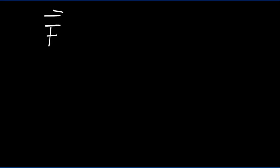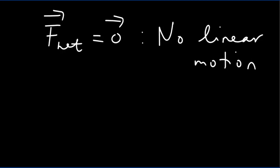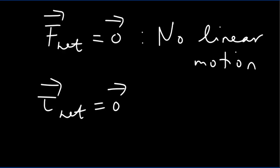To sum up: the first condition for static equilibrium, that the net force is zero, ensures no linear motion. And the second condition for static equilibrium, that the net torque of the system is zero, ensures no rotational motion.